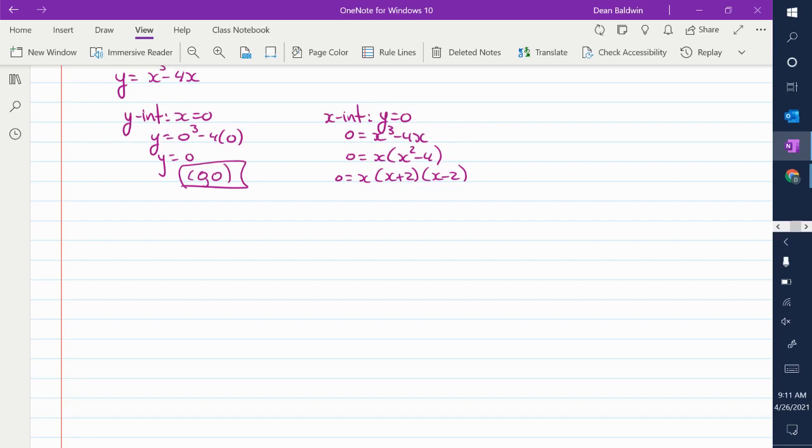So it turns into x plus 2, x minus 2. Then your intercepts are whatever makes each bracket zero, right? So zero, negative 2, and positive 2. So x is equal to zero, negative 2, positive 2. So as ordered pairs, it would be zero, zero, which we had there, so we knew that, negative 2, zero, and positive 2, zero. There's your x-intercepts.